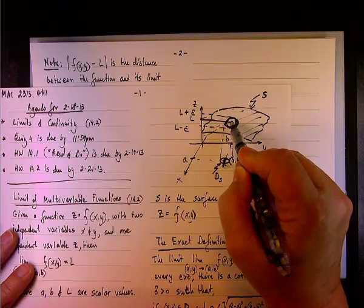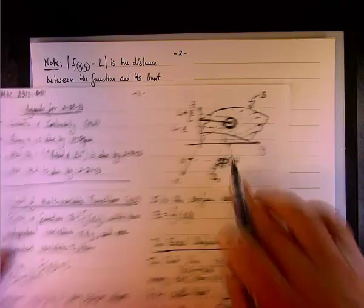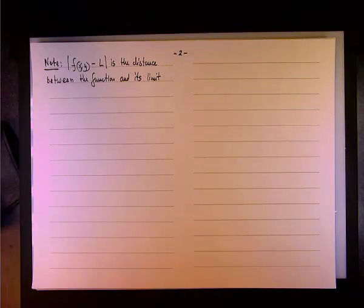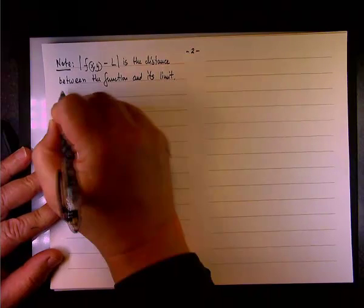Going back to this little sketch, basically, it's the distance between the outer zone here and the limit, which is the point on the surface.